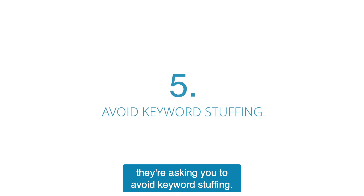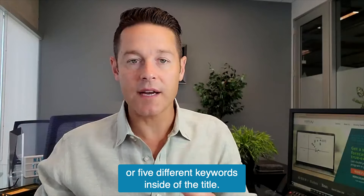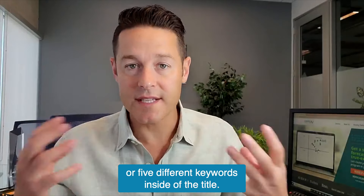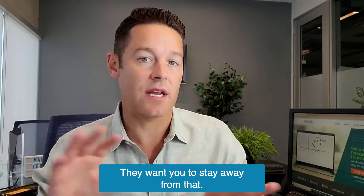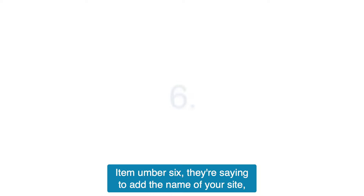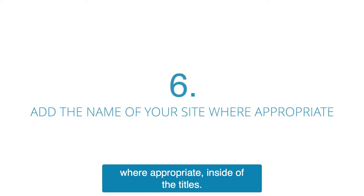Item number five: they're asking you to avoid keyword stuffing — not just shoving four or five different keywords inside of the title. They want you to stay away from that. Item number six: they're saying to add the name of your site where appropriate inside of the titles.